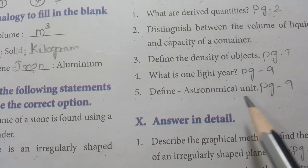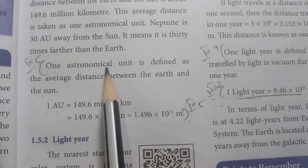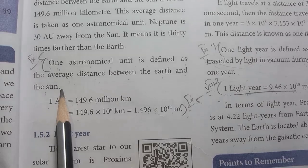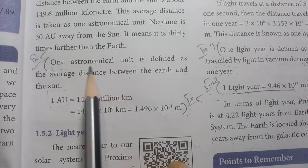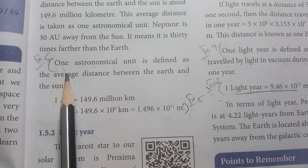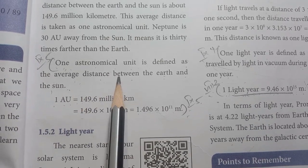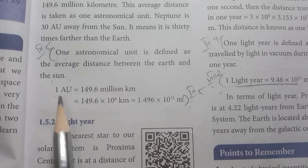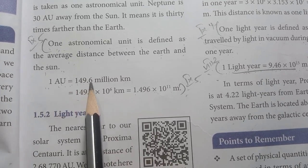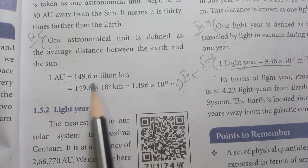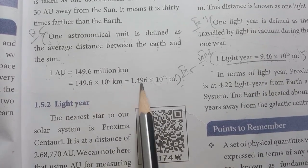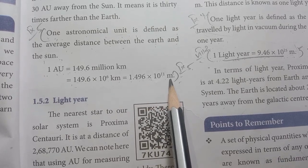Fifth: define astronomical unit. Page number 9. One astronomical unit is defined as the average distance between the Earth and the Sun. One AU equals 149.6 million kilometers, which is 149.6 into 10 power 6 kilometers, or 1.496 into 10 power 11 meters.